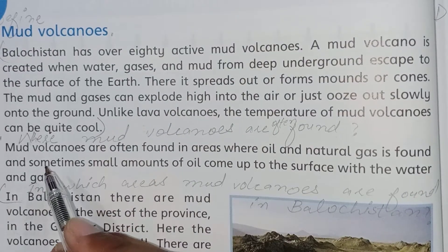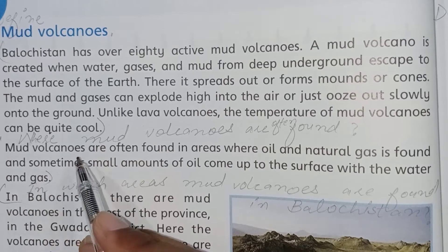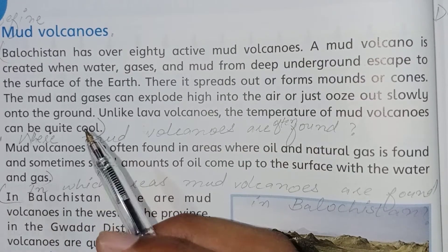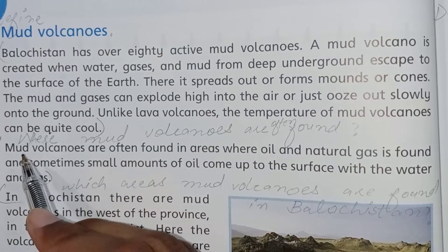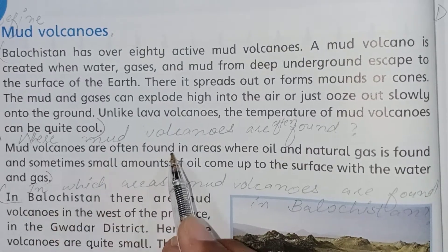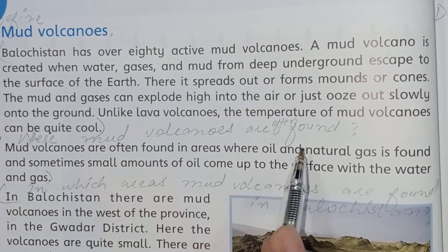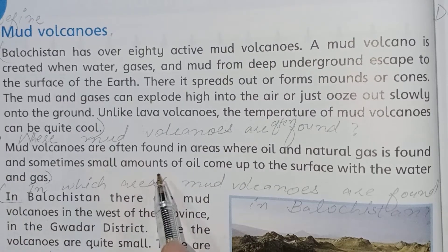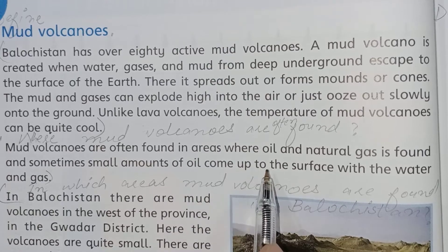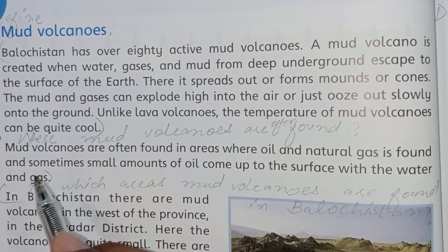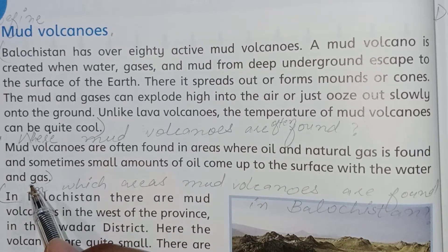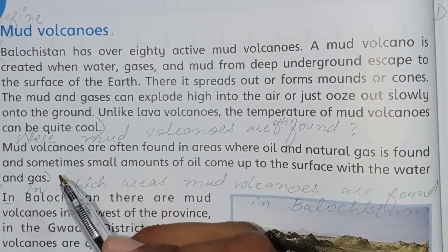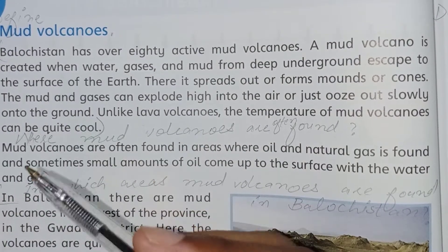Now I am going to read the second paragraph, where we will read where mud volcanoes are often found. Mud volcanoes are often found in areas where oil and natural gas is found, and sometimes small amounts of oil come up to the surface with the water and gas.